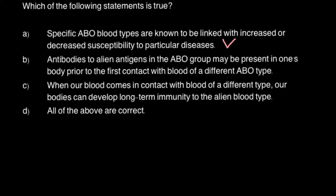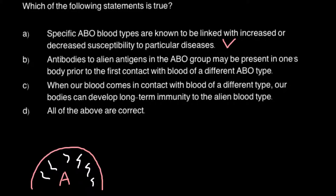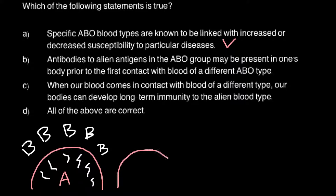Statement B: Antibodies to alien antigens in the ABO group may be present in one's body prior to the first contact with blood of a different ABO type. Here is an example. Imagine this is a red blood cell of type A — on the surface we have antigens A, and in the serum of blood group A we have antibodies B. For red blood cell of type B, on the surface we have antigens B, and in the serum we have antibodies A.